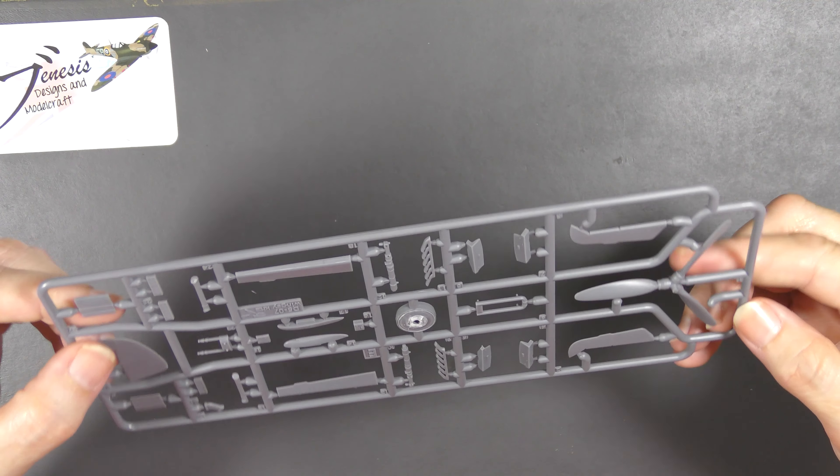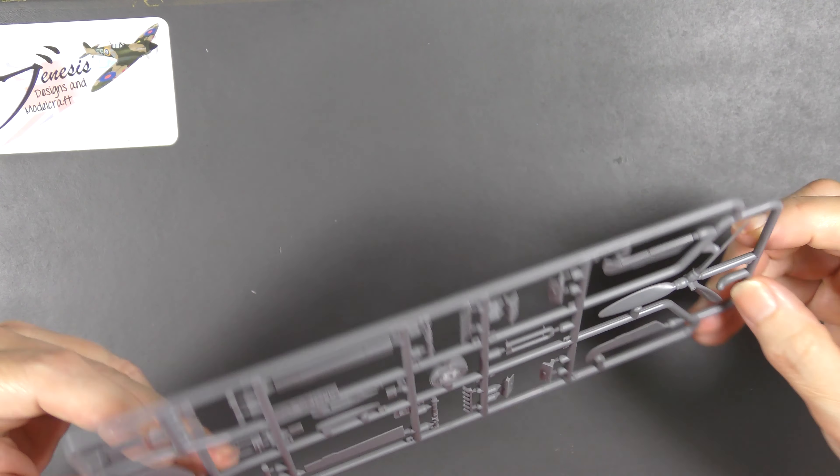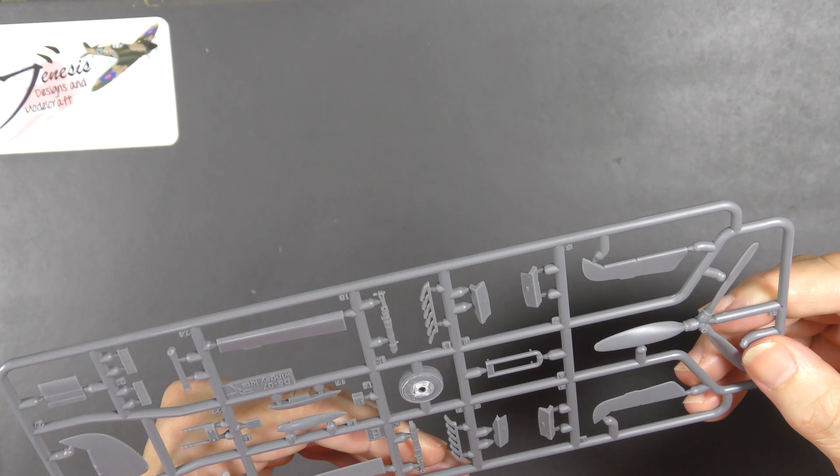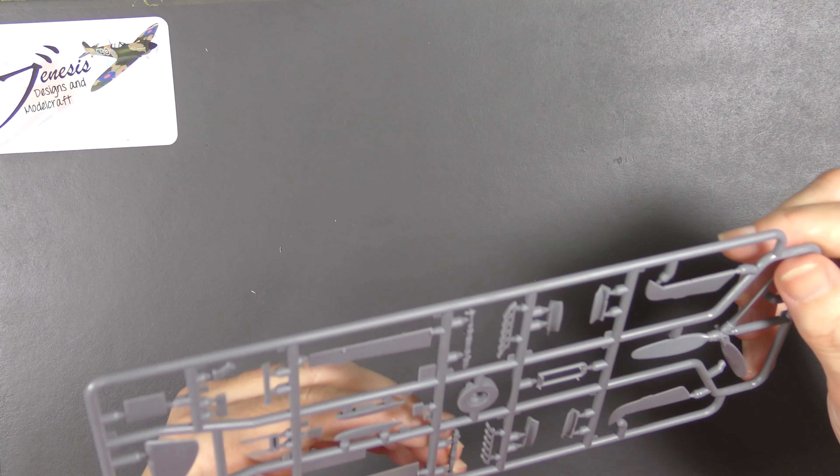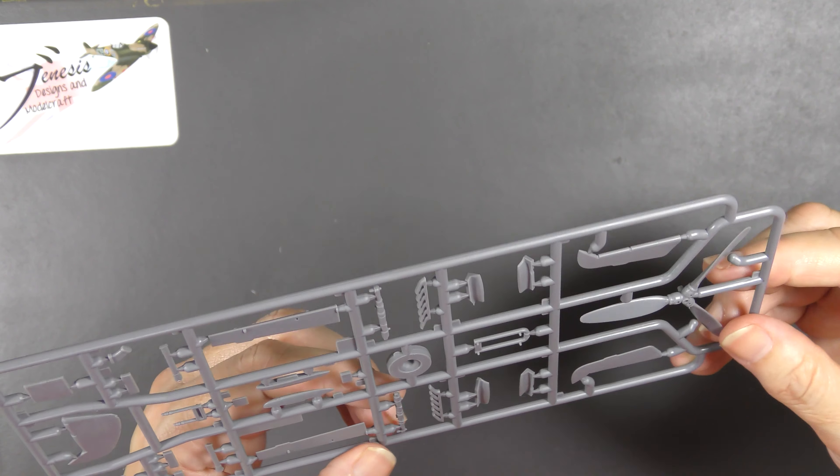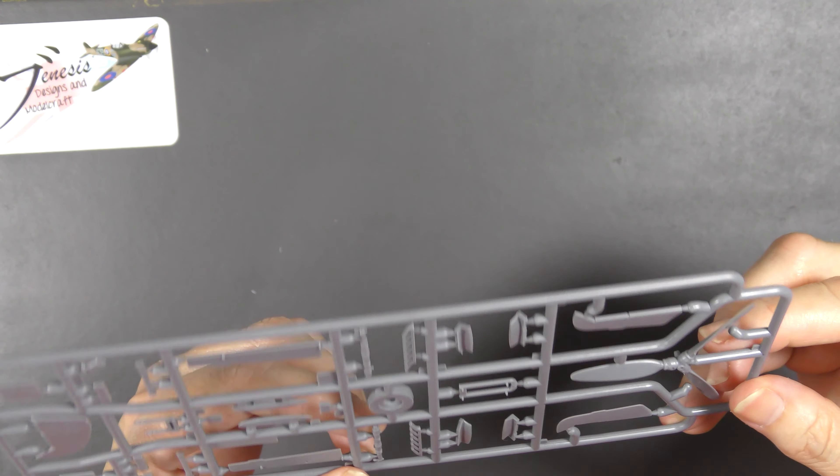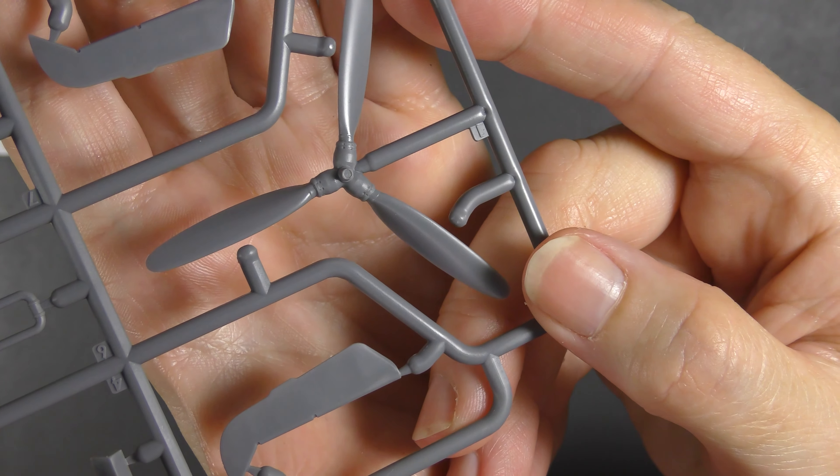The exhausts are not hollow as you can see there. Undercarriage legs look to be very nicely molded and detailed but with very minimal mounting points for both the wheel and the leg itself, could be a tad spindly. Propeller hub has really lovely detail on the part where it hits the blades, which is nice because that is somewhat visible on the 109, particularly these early models.